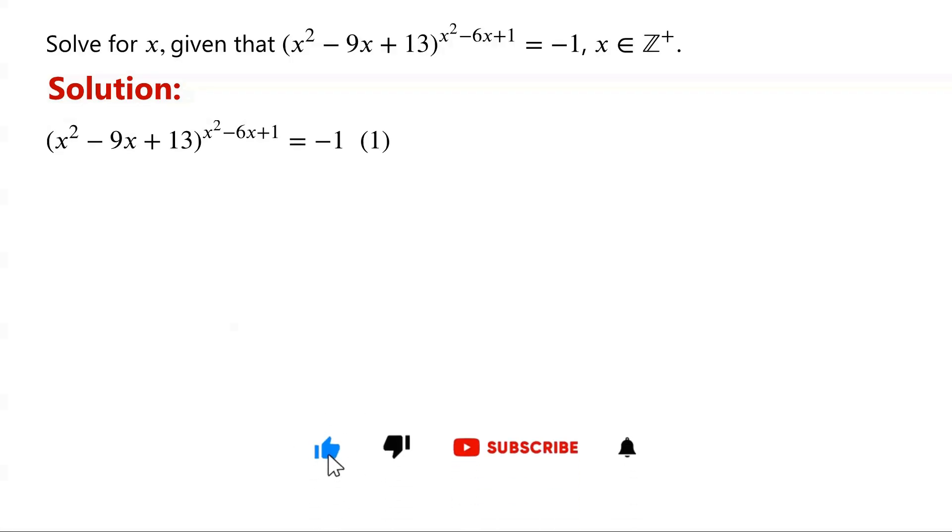If we let a represent the base and b represent the exponent, then we have a to the power of b equals negative 1.